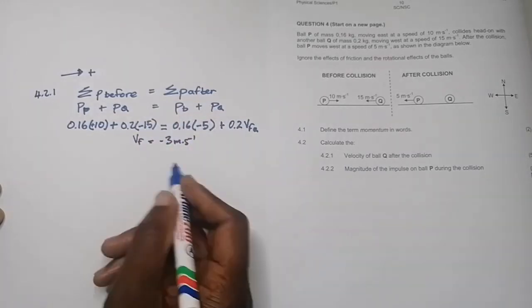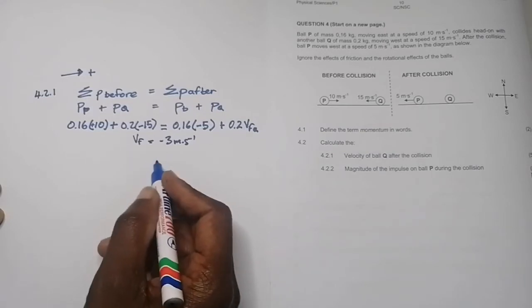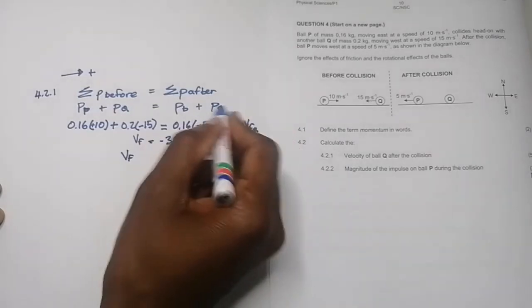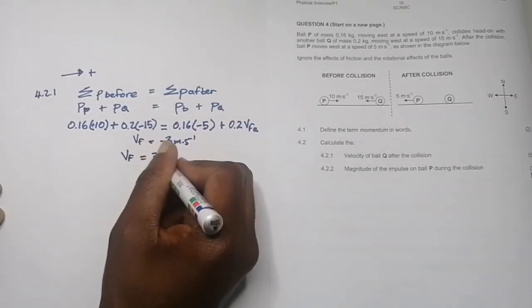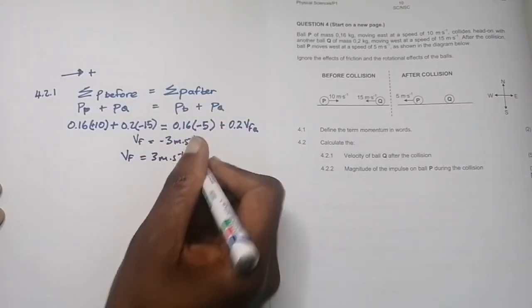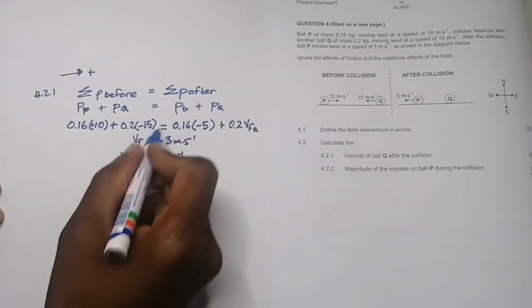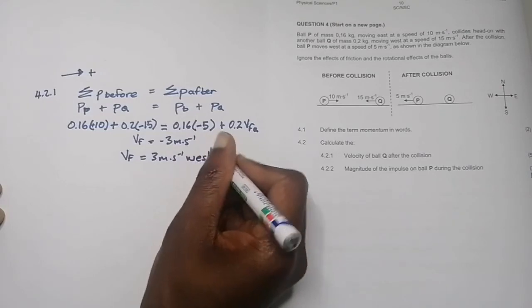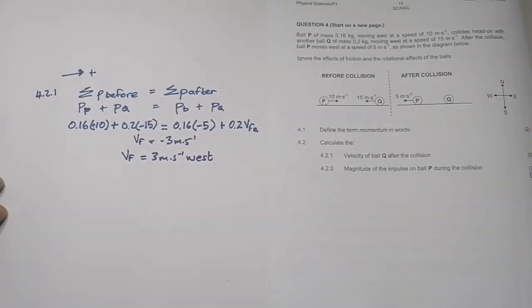The final velocity of ball Q should be 3 meters per second, and in which direction? We said negative, so it must be to the west. You can check it out and verify it for yourself and check if that is true.